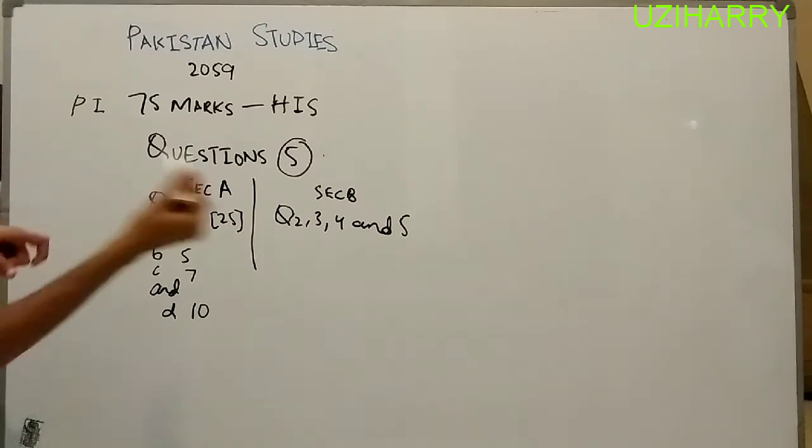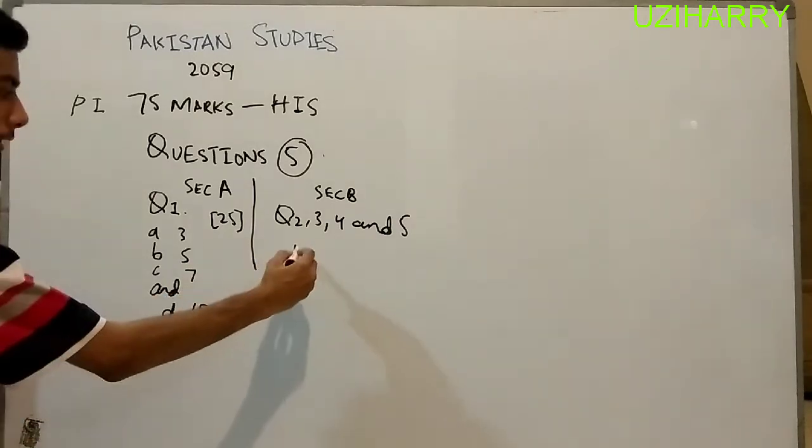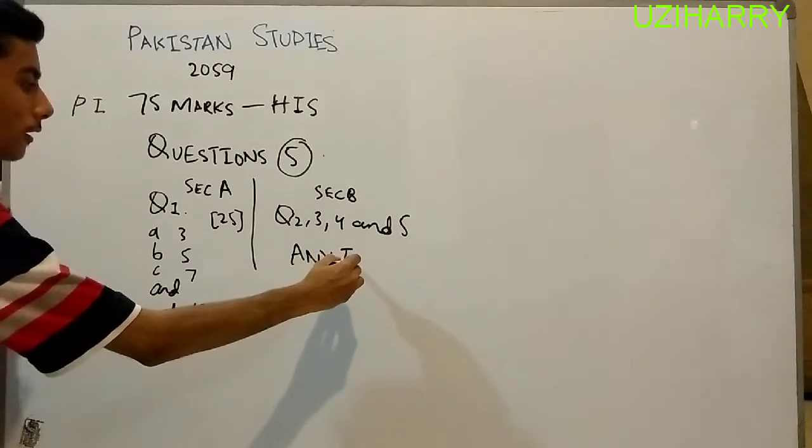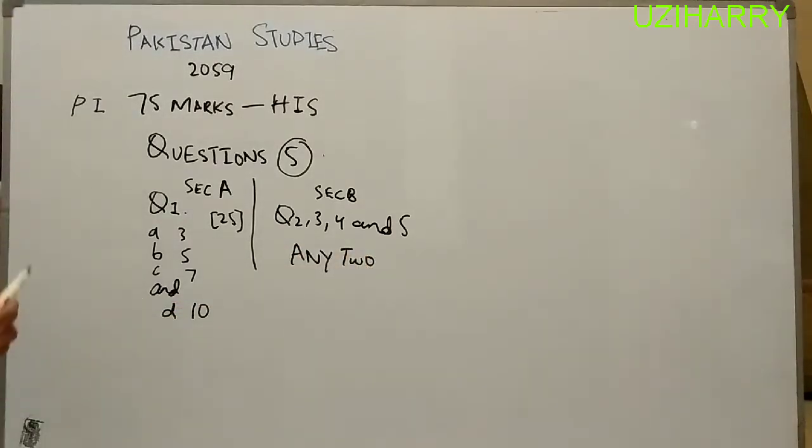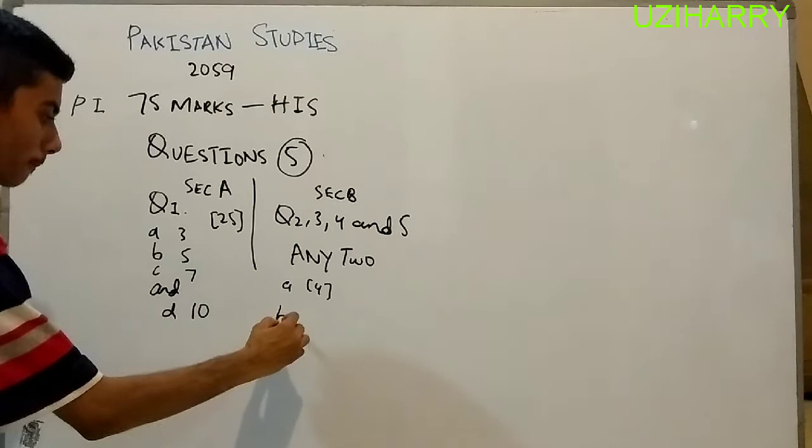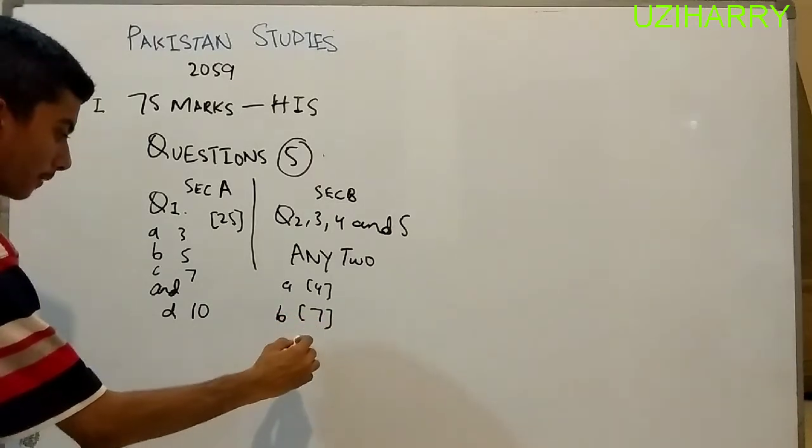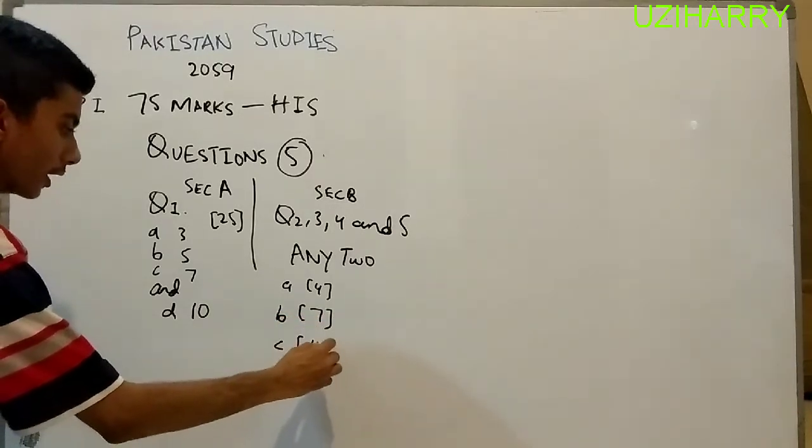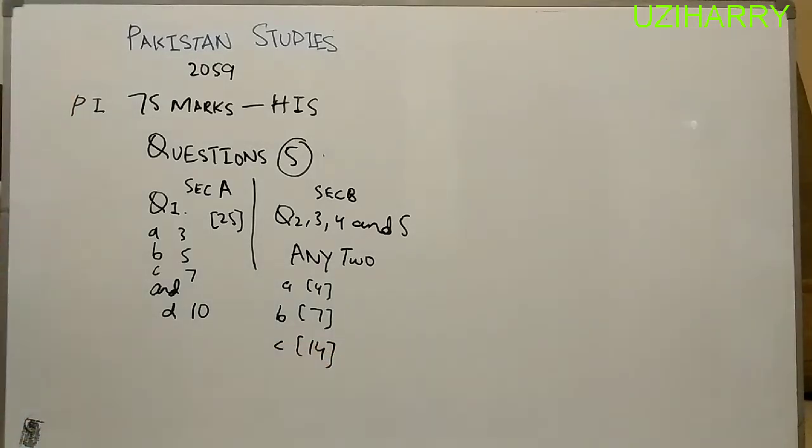Section B comprises of questions 2, 3, 4, and 5 and you need to attempt any two. These four questions are comprised of part A which is of four marks, part B which is of seven marks, and part C which is of 14 marks. These questions are from all the sections of your book - section A, section B, and section C.